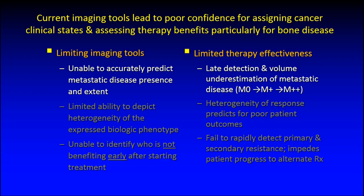Why do we need it? We need it because current imaging tools lead to poor confidence for assigning the malignant cancer state and for assessing response. Limitations with current imaging tools mean that we are unable to accurately predict the presence and the extent of metastatic disease.